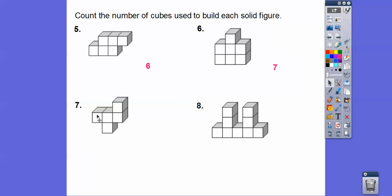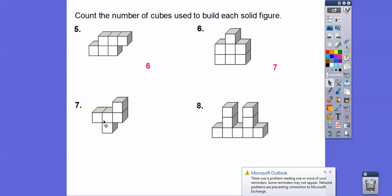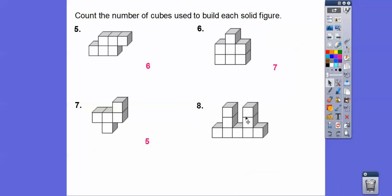How about this one? One, two, three, four, five — there are five in that one. How about this one? One, two, three, four, five, six, seven, eight, nine — I count nine on that one. These are always in cubic units.